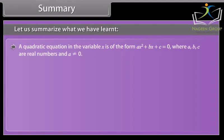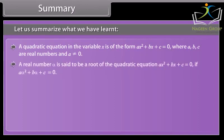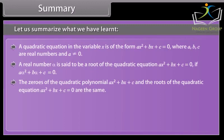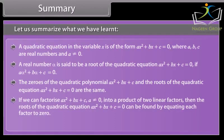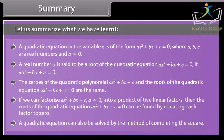Summary. A quadratic equation in the variable x is of the form ax² + bx + c = 0, where a, b, c are real numbers and a ≠ 0. A real number alpha is said to be a root if aα² + bα + c = 0. The zeros of the quadratic polynomial ax² + bx + c and the roots of ax² + bx + c = 0 are the same. If we can factorize ax² + bx + c into a product of two linear factors, the roots can be found by equating each factor to zero. A quadratic equation can also be solved by the method of completing the square.